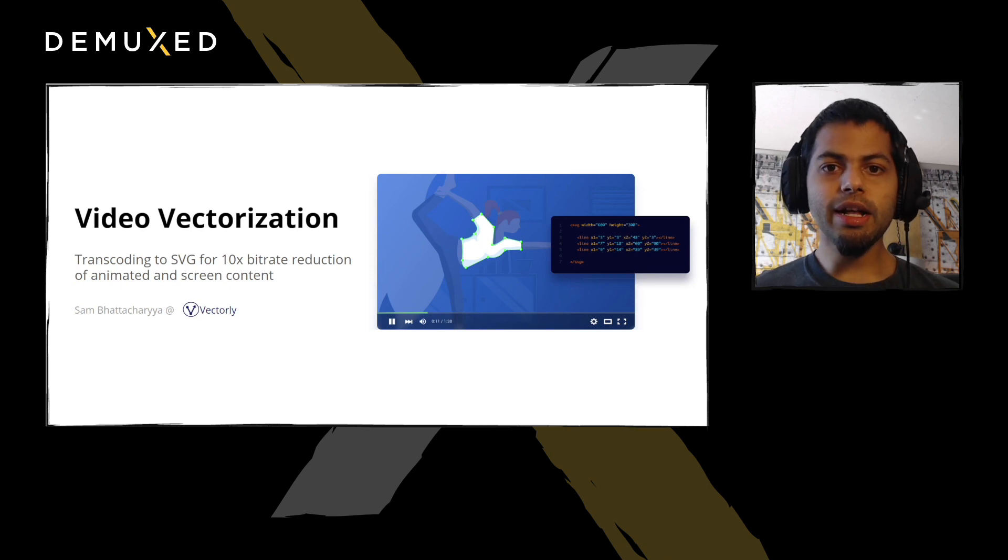The idea is to transcode video to SVG animations. Using SVG as a video codec may sound weird, but it can actually outperform AV1 and H.265, obtaining order-of-magnitude bitrate reductions for animated in-screen content.